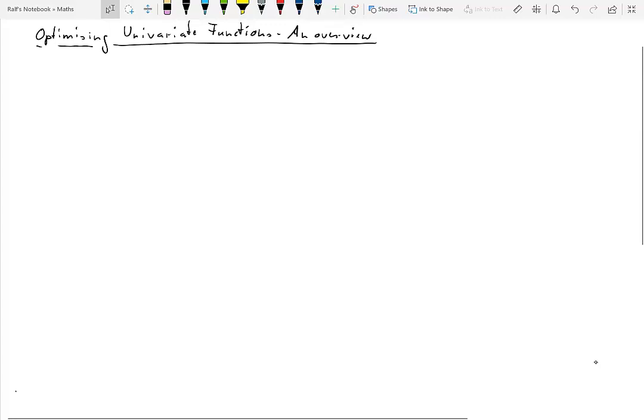This clip gives an overview of what is required to identify an optimum, local and or global, in univariate functions. So here's some notation: we use the function f(x).